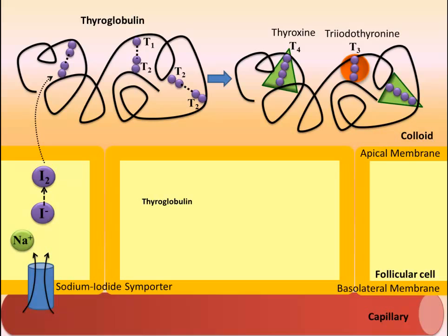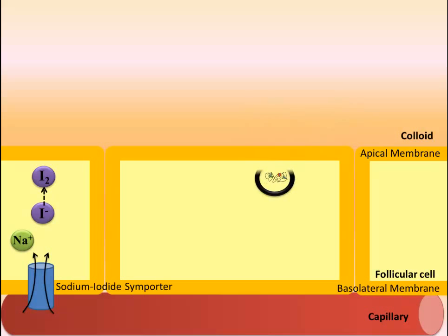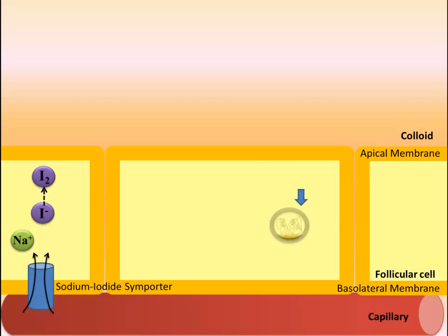At this point, the thyroid molecules are still attached to the thyroglobulin backbone, and these mature thyroid hormones can be stored in the colloid until needed by the body. In order to release the thyroid hormones into the bloodstream, thyroglobulin and its iodinated tyrosines undergo endocytosis and enter the follicular cell. This vesicle then fuses with a lysosome, forming an endolysosome. Digestive enzymes inside the lysosome break down the thyroglobulin backbone, releasing the T3 and T4.